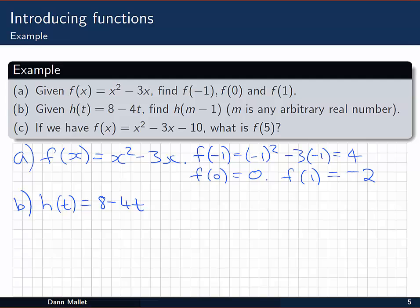Okay, so in part b, we're given h of t is 8 minus 4t. We're asked to find h of m minus 1, where m is some arbitrary real number. That's no problem—it's not a regular number, but let's just substitute in m minus 1 anyway.